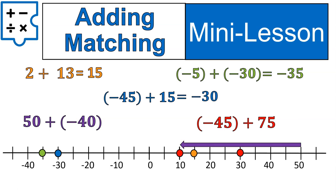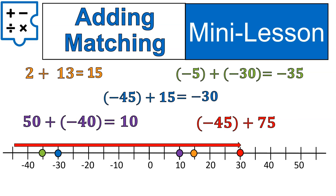Let's move on to our purple question. 50 plus negative 40 means we start at 50 and we're going to the left 40 spaces. We have more positives than negatives, so that means we are ending with a positive 10. Our final question, negative 45 plus 75 — I kept this arrow fully inside of our number line here. Negative 45 plus 75 gives us a positive 30.